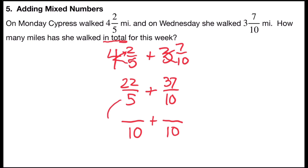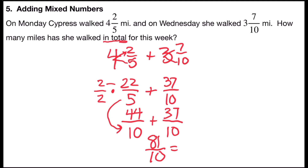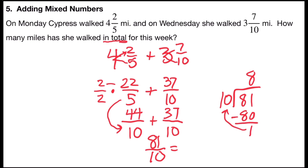Now I'll rename the numerators. Five times what number is ten? That's two, so I multiply by the form of one: two over two. Two times twenty-two is forty-four, so twenty-two-fifths is the same as forty-four-tenths. The second fraction's denominator didn't change, so I keep the numerator as thirty-seven. Now I add: forty-four plus thirty-seven is eighty-one over ten. Ten divides into eighty-one eight full times — eight times ten is eighty — with a remainder of one out of ten. So Cypress has walked a total of eight and one-tenth miles this week.